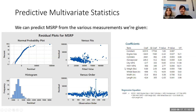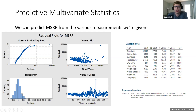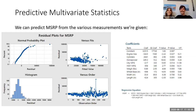Cylinders is significant, and cylinders is very similar to engine size. If you have a 12-cylinder car, it's probably going to be more expensive than a four-cylinder car.